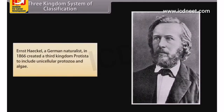The 3 Kingdom System of Classification: Ernst Haeckel, a German naturalist, in 1866 created a third kingdom, Protista, to include unicellular protozoa and algae.